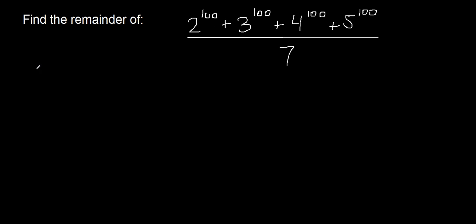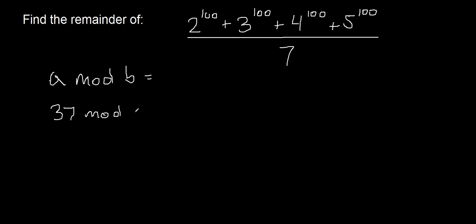Now if you guys don't know modular notation or mod notation, I'll teach it to you now because I don't want to say that multiple times during the video. If you have a mod b, that just means find the remainder when a is divided by b. So if you have for example 37 mod 7, that means find the remainder when 37 is divided by 7. Since 35 is a multiple of 7, the remainder is 2.